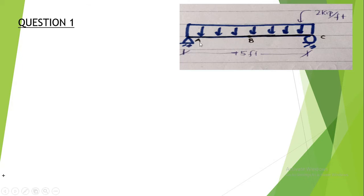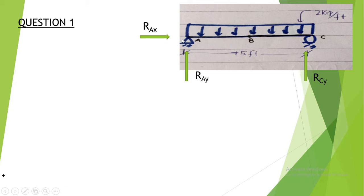Let's discuss Case 1. We have a simply supported beam on which a UDL of intensity 2 k/ft is acting, with a span length of 5 feet. For a simply supported beam we have three reactions — two at the hinge and one vertical at the roller. To determine reactions for UDL, we must first convert the UDL into a resultant concentrated point load.